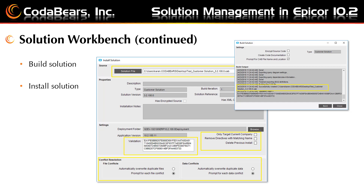You can browse to the exported solution file and notice that the hash is automatically listed in the validation box since our export had the validation file in the same folder. You will also choose the settings and conflict resolution options that you would like to be enforced during your install. Then click on the Install button at the bottom, which is not shown here due to picture space requirements.